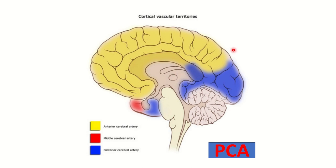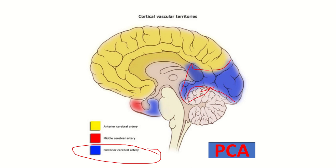Here we can see a hemisection of the brain showing different parts supplied by different arteries. The posterior cerebral artery supplies the occipital area. So if there is any occlusion of the posterior cerebral artery, it affects the occipital region, which is responsible for vision.